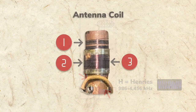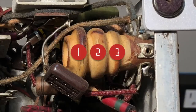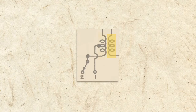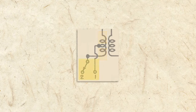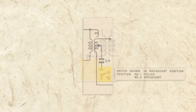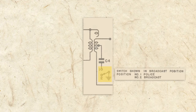As with the antenna coil, the oscillator coil in our radio is actually three coils: one primary, a secondary for the AM band, and a secondary for the shortwave band. The same switch that selected the secondary in the antenna coil also selects the secondary in the oscillator coil.